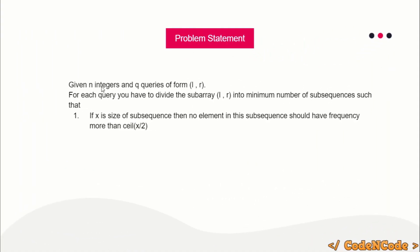The problem statement: you are given an integer array of size n and q queries of the form (l, r). You have to process the subarray from l to r. You can divide the subarray into disjoint subsequences and you have to divide it into the minimum number of subsequences such that each subsequence satisfies the condition: if x is the size of the subsequence, then the most frequent element should not have frequency more than ceil(x/2). For example, ceil(5/2) = ceil(2.5) = 3.